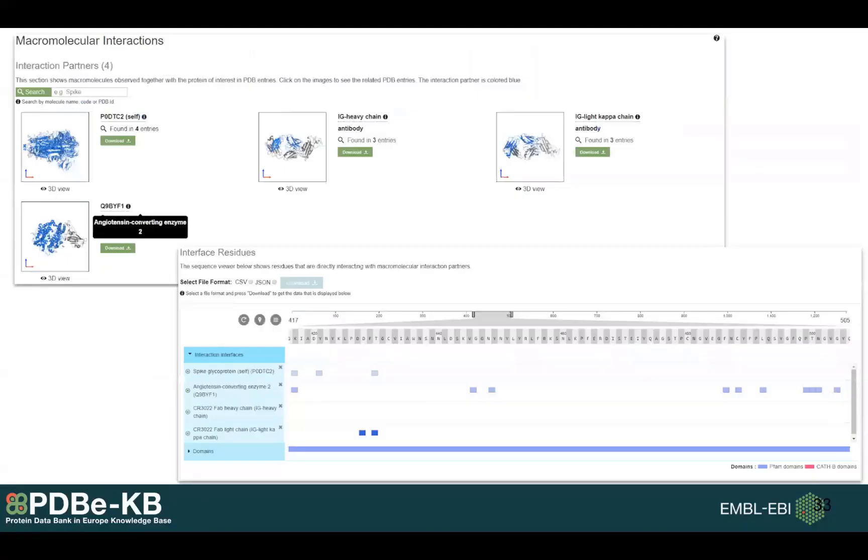We have the similar setup for macromolecular interactions. Again we have a gallery. If this interaction partner has a UniProt accession, you can actually go to its own aggregated view page. And again we are showing which residues are involved in interactions, basically showing you the interaction interface.